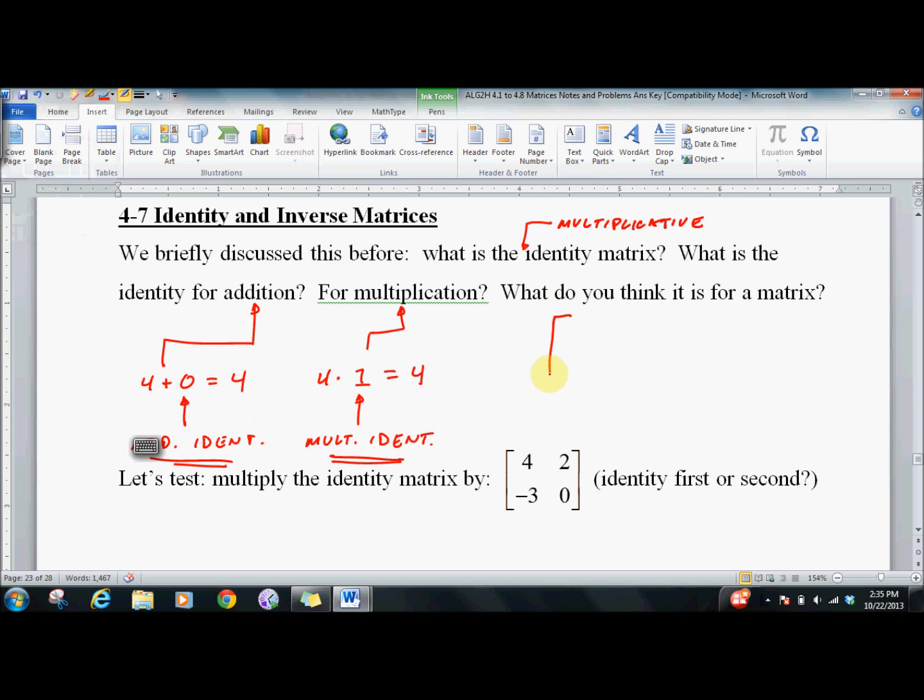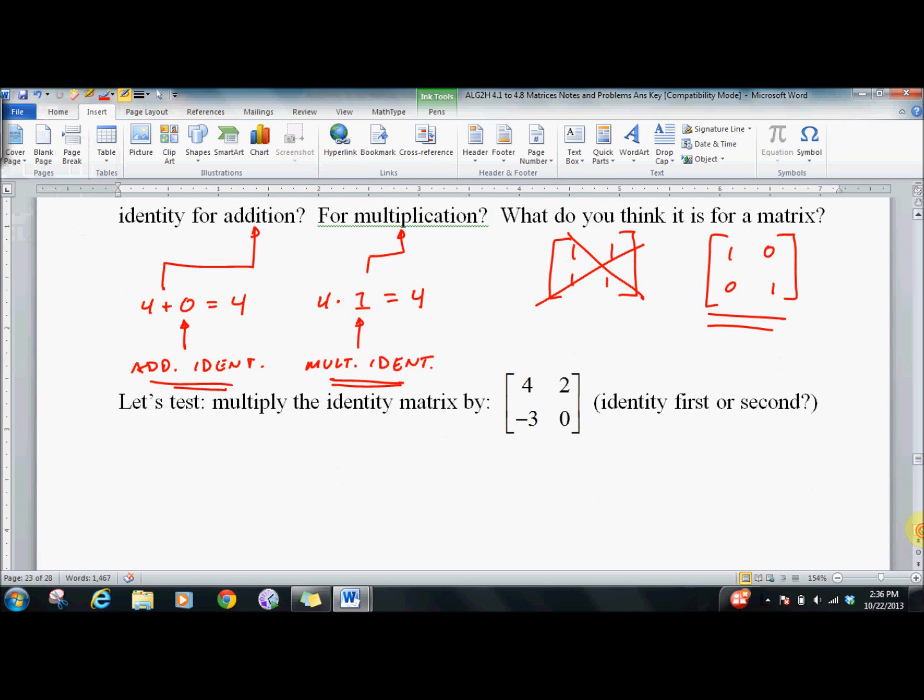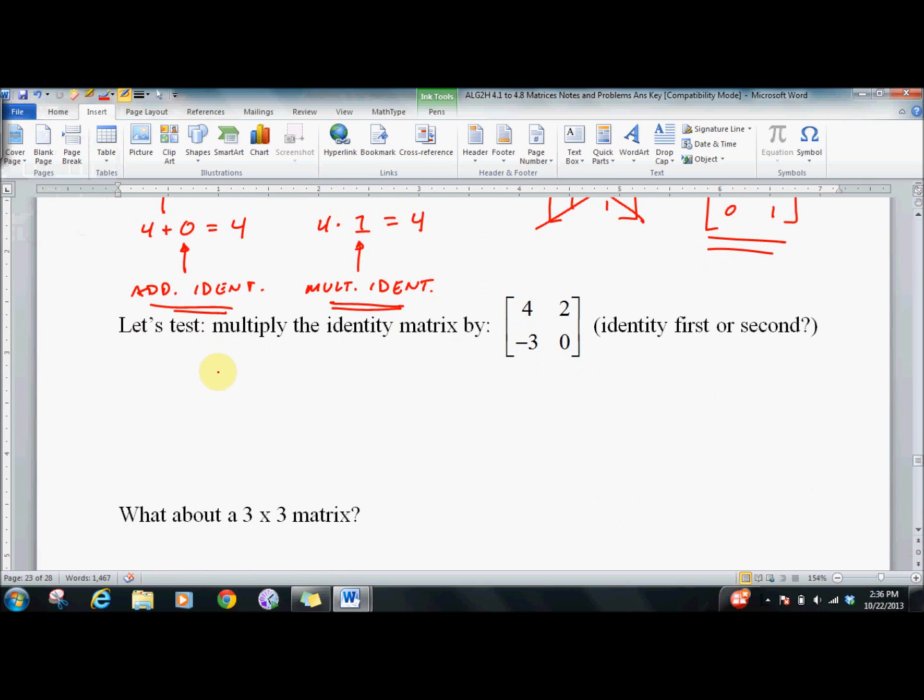We discussed that we thought it might be [1, 1; 1, 1]. We tried it, and it failed. Somebody said, well, why don't you try [1, 0; 0, 1]. I think that's it. So let's check if we take [4, 2; -3, 0] multiply by [1, 0; 0, 1]. We get 4, 2, negative 3, 0.